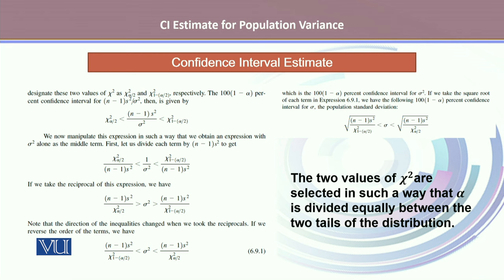This is the reliability factor as the lower confidence limit, and (n-1)s² divided by chi-square α/2 is the upper confidence limit. The two values of chi-square are selected in such a way that alpha is divided equally between the two tails of the distribution.